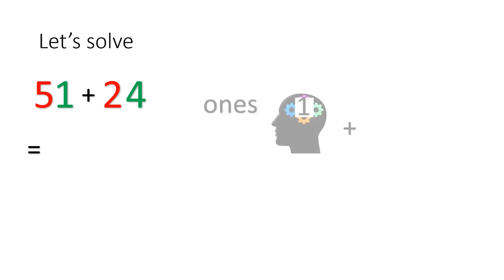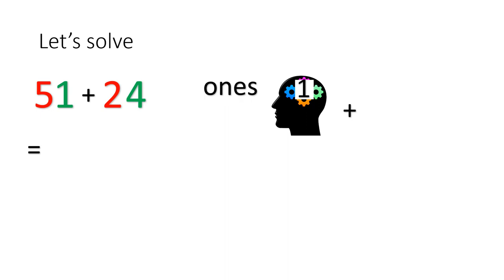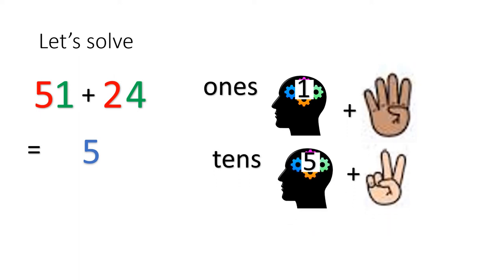Look at the 1s. You have 1 in your head plus 4 on your fingers. Now let's count the number after 1: 2, 3, 4, 5. And you write 5. Now for the 10s, you have 5 in your head and 2 on your fingers. What's the number after 5? 6, 7. So you write 7. The answer is 75.